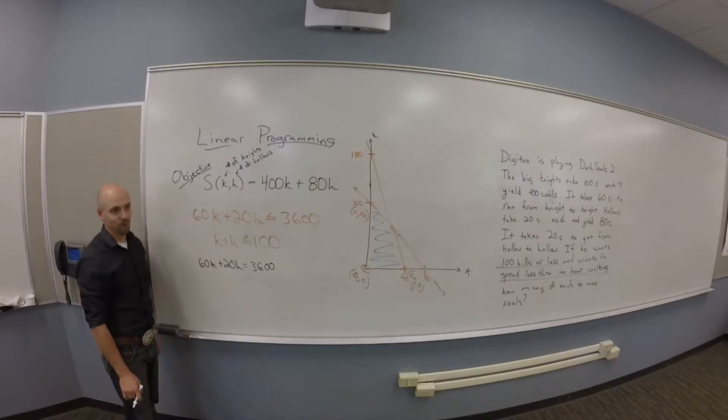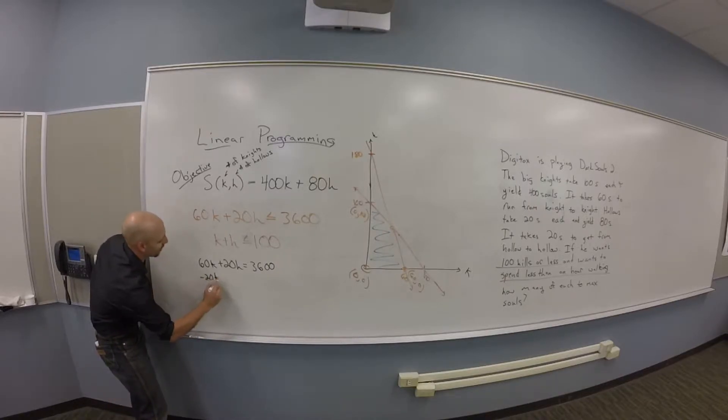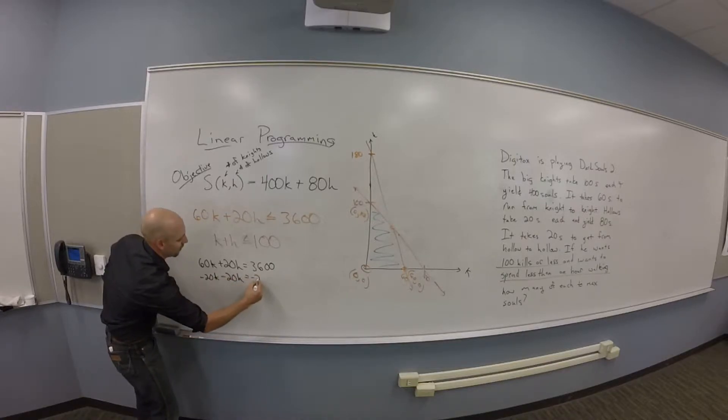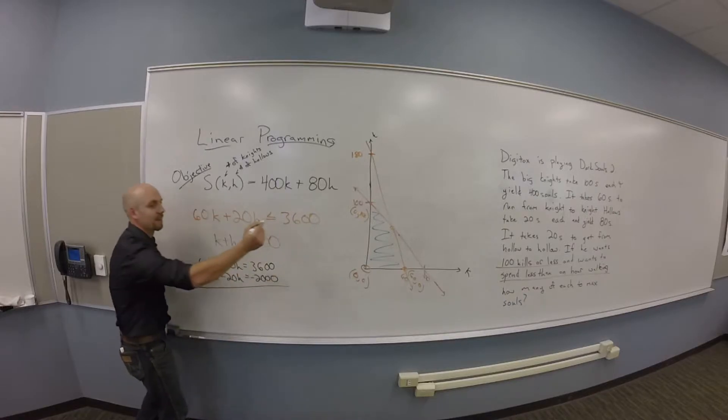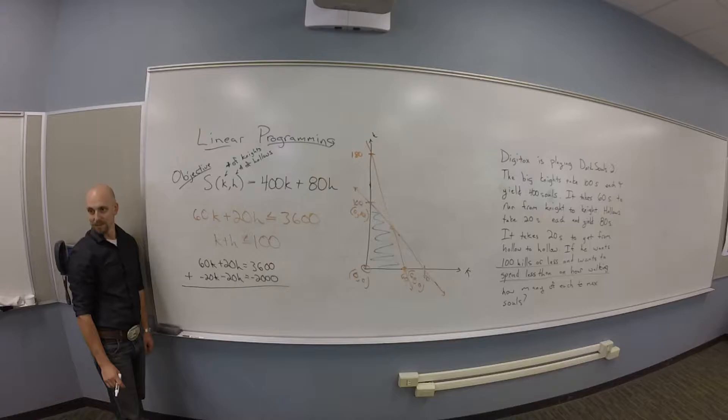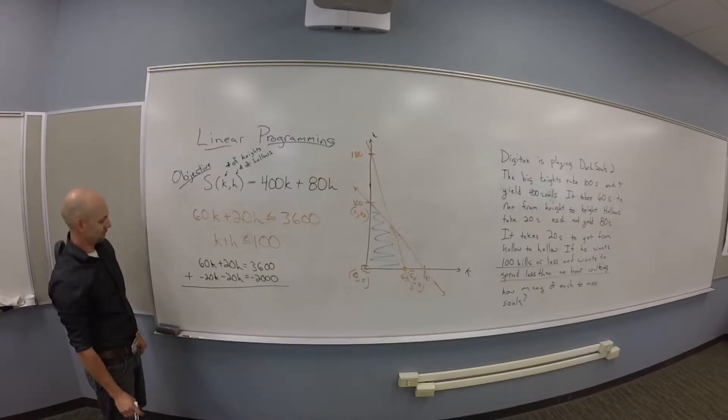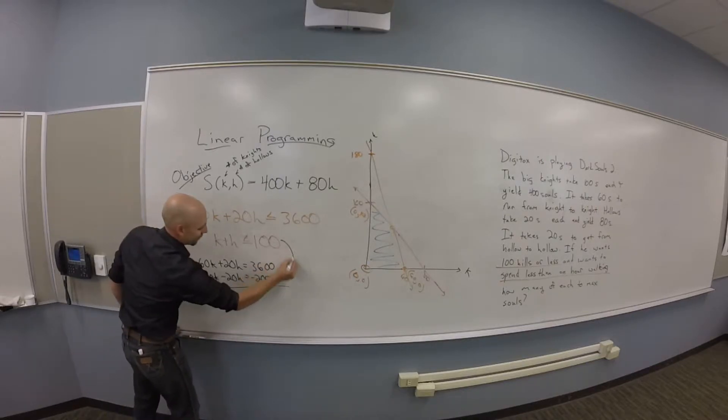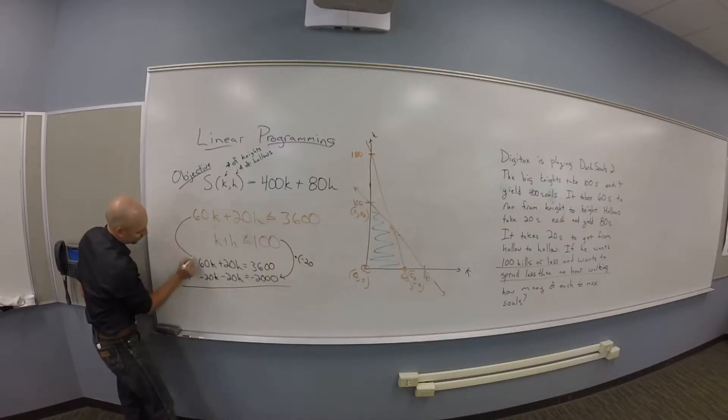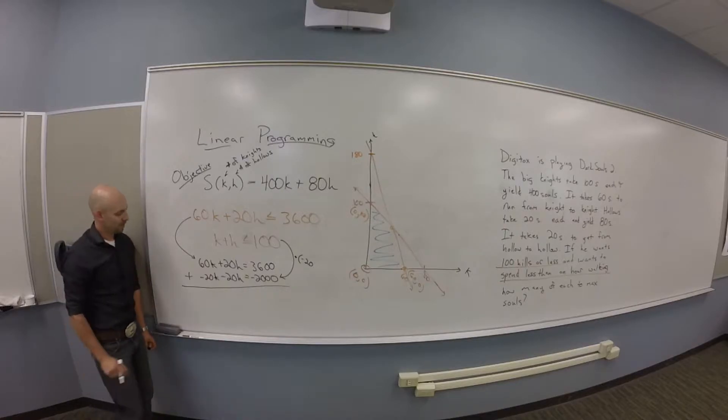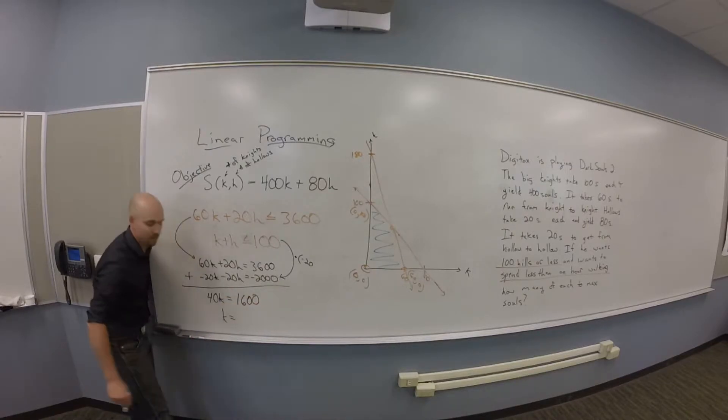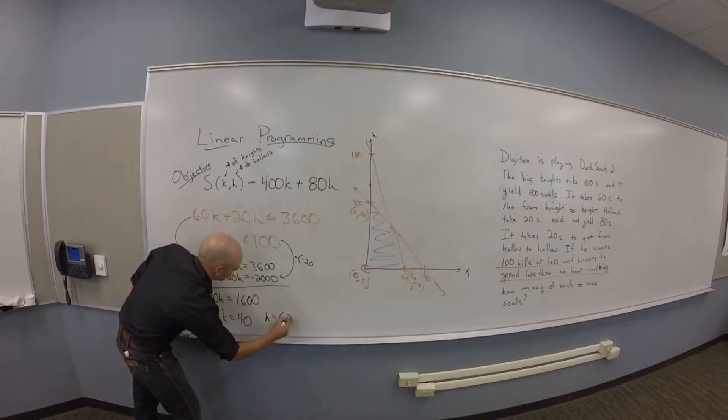I'm going to multiply the second equation by what? Probably negative 20. I think I'm going to go with negative 20. And then add these together. This is the red one multiplied by negative 20, and this is just the orange one copied down. I think I got 40K equals 1600, which tells me K should be 40. If K is 40, what's H? 60.